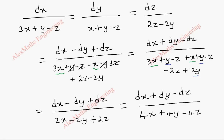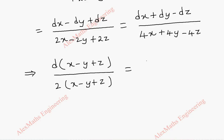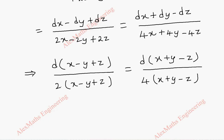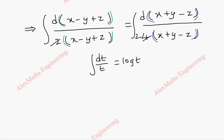Taking d common: d(x minus y plus z) divided by 2(x minus y plus z), and on the other side d(x plus y minus z) divided by 4(x plus y minus z). We can cancel these terms and take integration on both sides. We notice it is in the form dt by t, which will become log t.